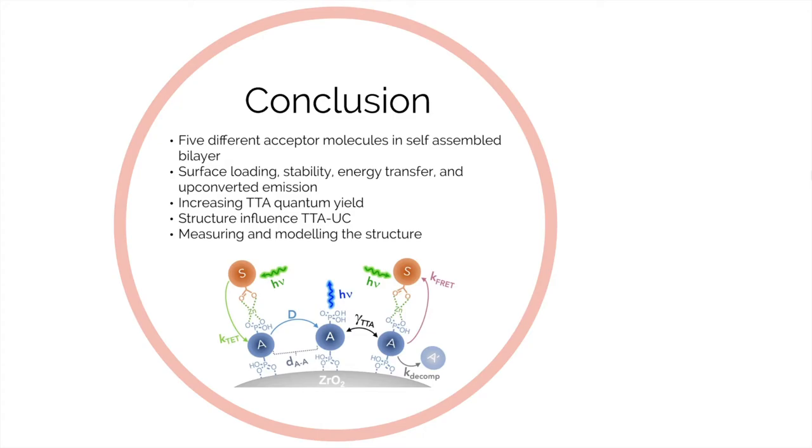Second, the structure of the acceptor molecules can be, but is not always, a key factor in influencing the TTA-UC in the bilayer structures. Finally, measuring and modeling the structure at the interfaces will be a necessary step in fully explaining then controlling migration, triplet energy transfer, back energy transfer, and ultimately the triplet-triplet annihilation efficiency in self-assembled bilayers.